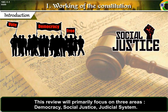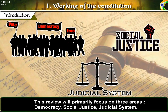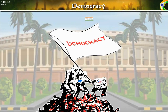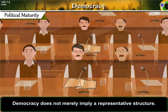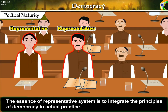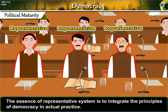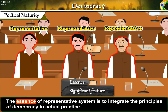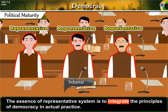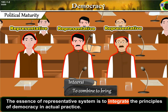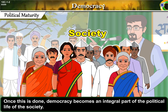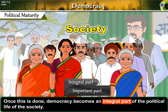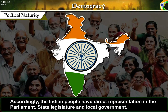Democracy and political maturity. Democracy does not merely imply a representative structure. The essence of a representative system is to integrate the principles of democracy in actual practice. 'Essence' means significant feature; 'integrate' means to combine fully. Once this is done, democracy becomes an integral part of the political life of the society. 'Integral part' means important part.